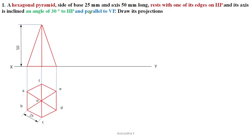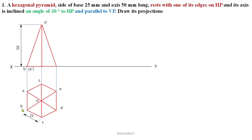Always use the axis as 50 mm; the slant edge length varies from the axis length. Now I can give names. If an observer is standing here, you can see B, C, D. A, F, E are invisible. O' is the apex or vertex. A' is invisible, B' is visible — that's why A' is marked in brackets. C' is visible, F' is denoted in brackets. D' is visible, E' is invisible, denoted in brackets. With this, you can complete the simple position of the hexagonal pyramid.